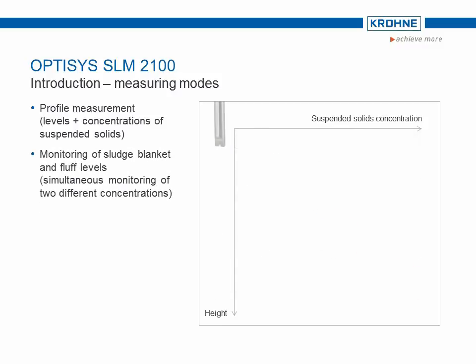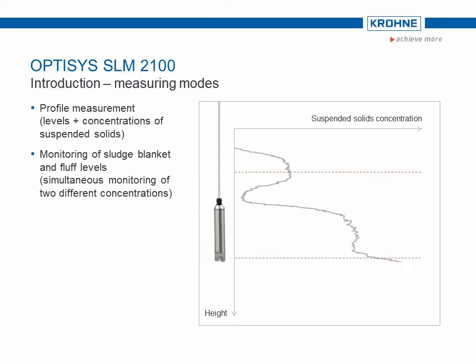The second measuring mode monitors the level of the sludge blanket and the fluff — that is, it measures the height of two distinctly different concentrations simultaneously. The two heights from the last measurement cycle are held at the current outputs of the SLM 2100 and are updated at the end of every further cycle, at typical five-minute intervals.